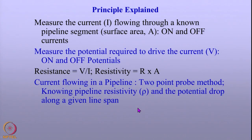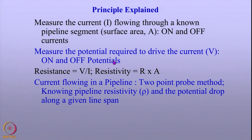If one has to measure the coating resistivity across a known segment of the pipeline — say about 4 to 9 kilometers — one requires a temporary ground bed to pass a DC current, connected to the pipeline through an interruptor. The currents passing along the pipeline at two locations are measured using potential drop with millivoltmeters. The pipe-to-soil potential at these locations is measured using a copper-copper sulfate electrode. The principle involved in measuring coating resistivity is simple: measure the current flowing in a known segment of known area, both when cathodic protection is turned on and when it is turned off.